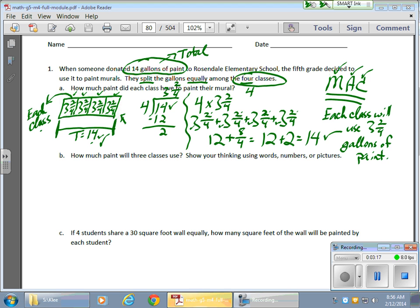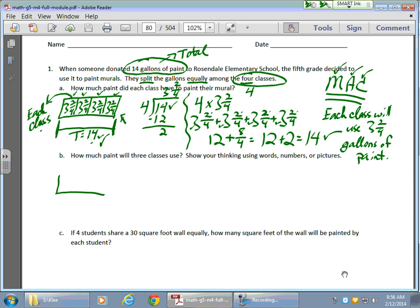Now part B, it reads how much paint will three classes use? Show your thinking using words, numbers, and pictures. I'm going to use MAC again, and this time, the only thing that's different here, here's my tape diagram. The total is still 14. I have three classes. So here's my each class again. Which means my algorithm is still going to show 14 as my total, except now I'm dividing my 14 into three parts.